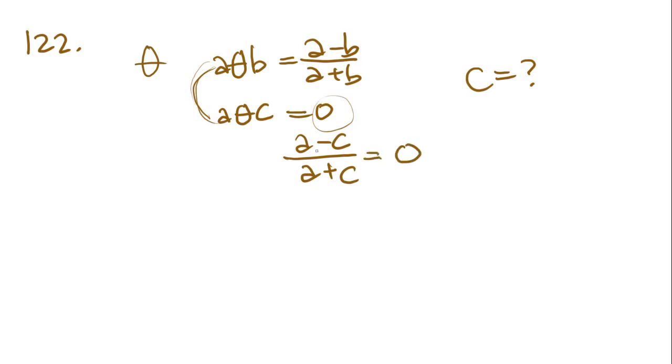So, let's set that equal to zero. Now, let's solve for C by first cross-multiplying. A minus C equals zero. Zero multiplied by anything is going to be zero. Now, what we do is we add C to both sides. And you get A equals C. So, what does C equal? C equals A. A is going to be answer choice E.